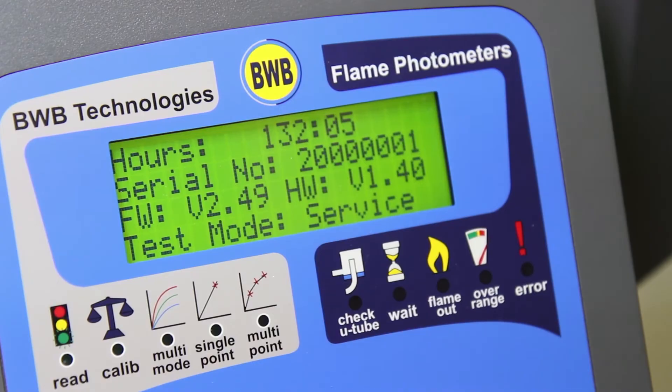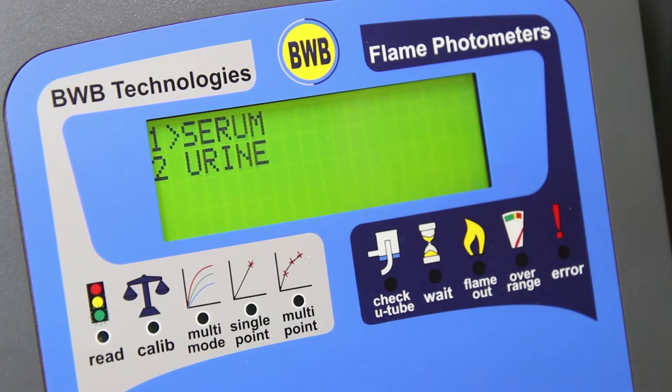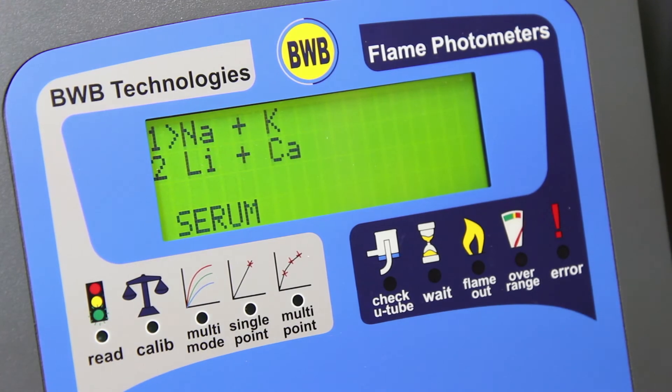Once you are in service mode, you are offered the option of testing for serum or urine. In this instance, we will select serum and sodium potassium ions.